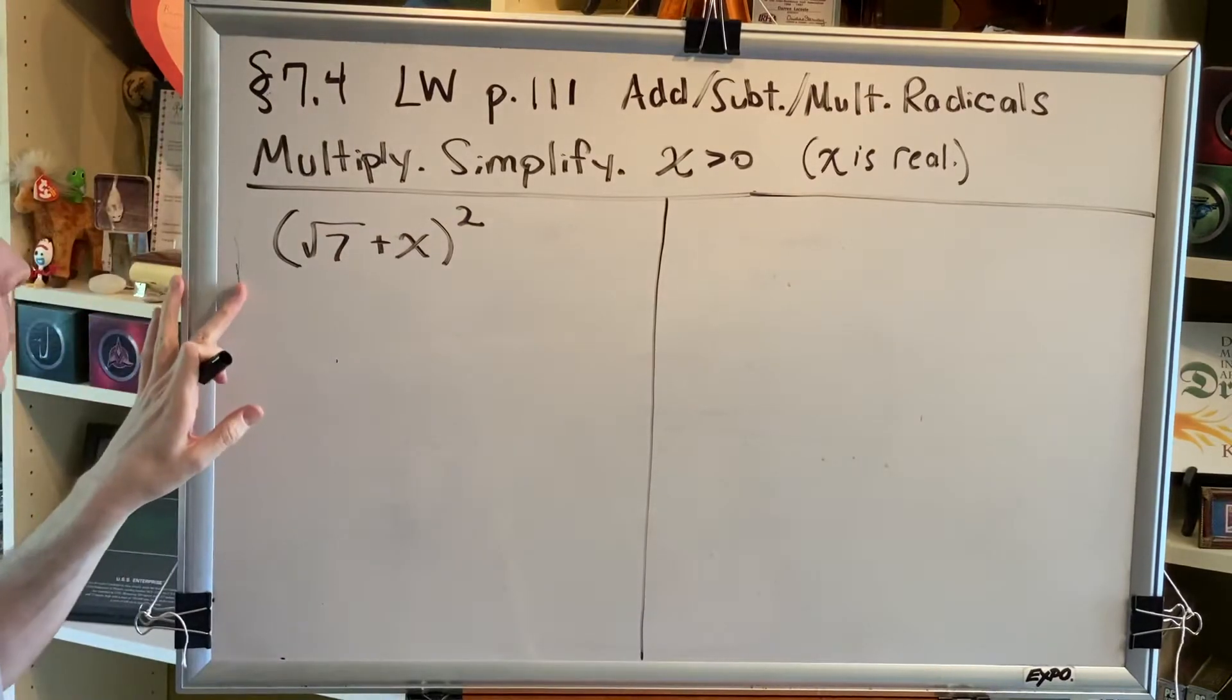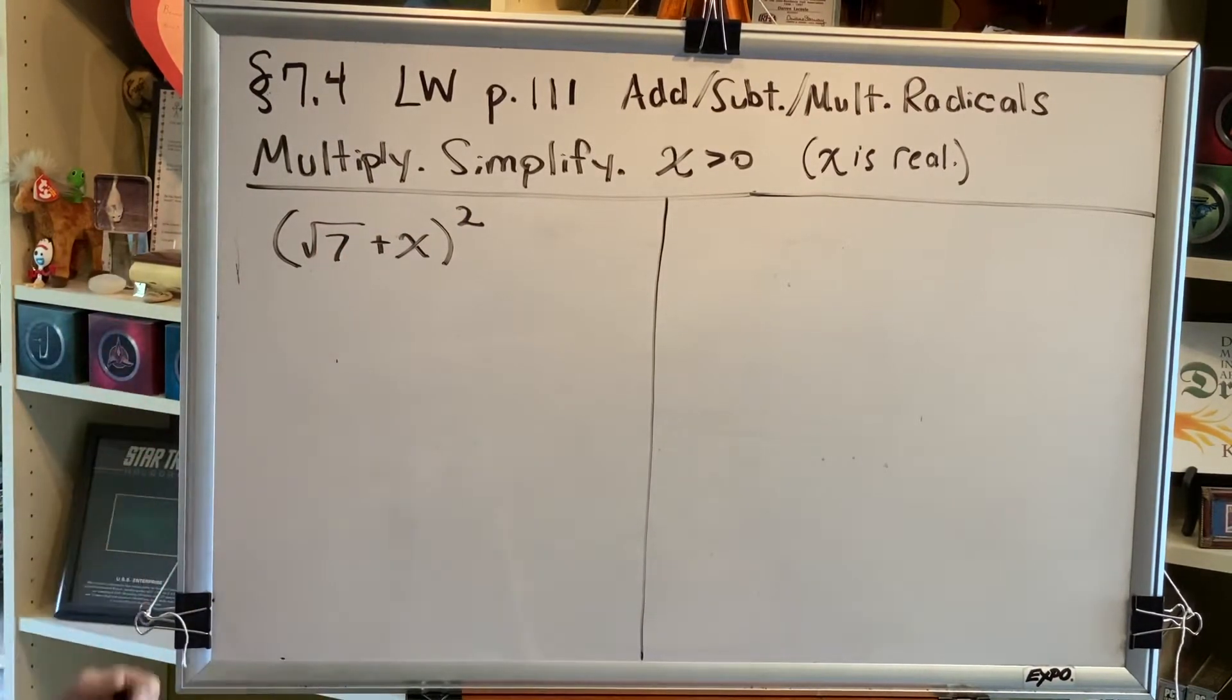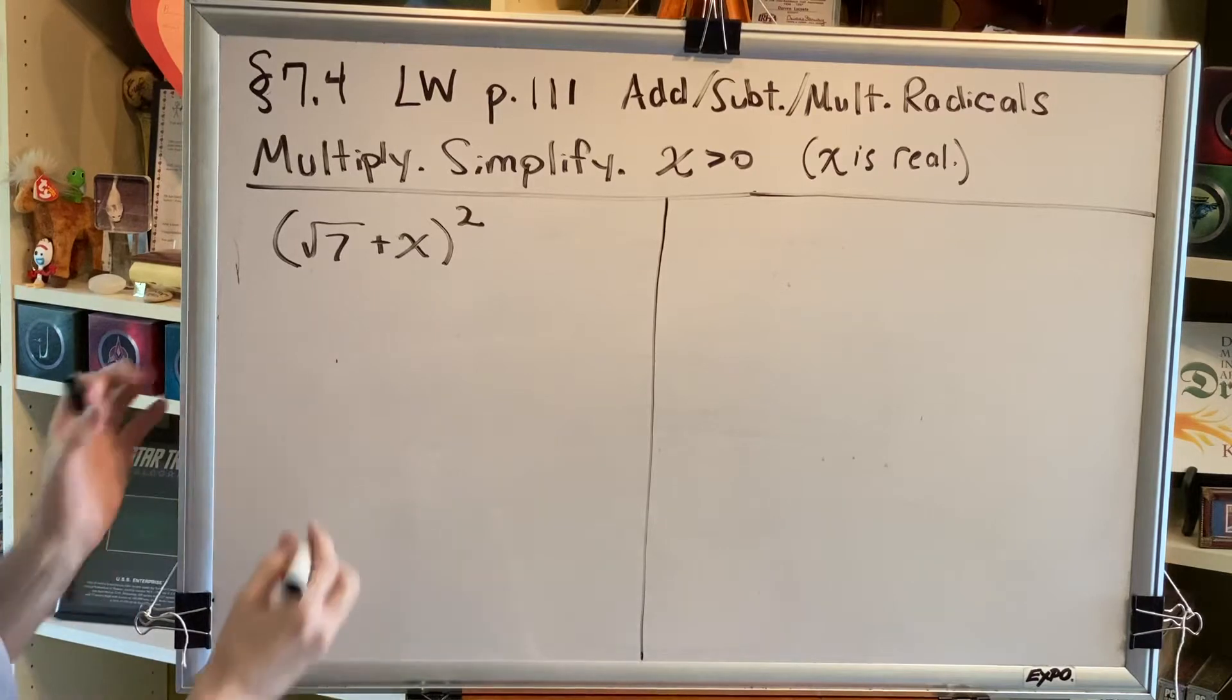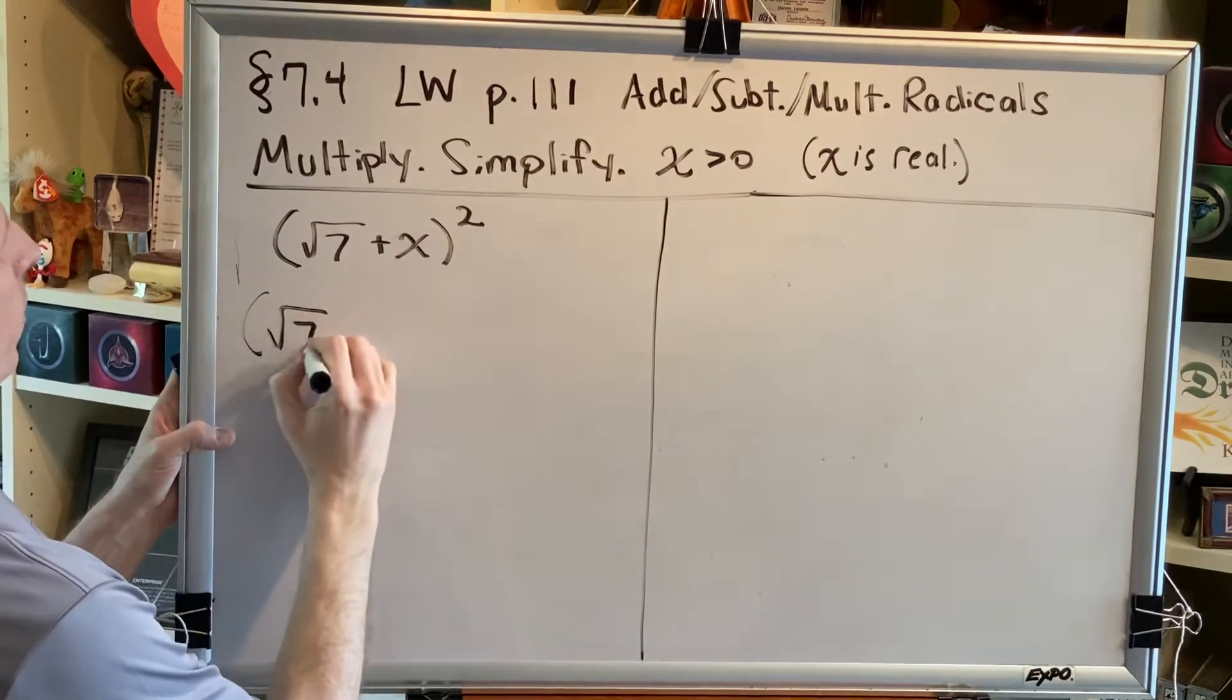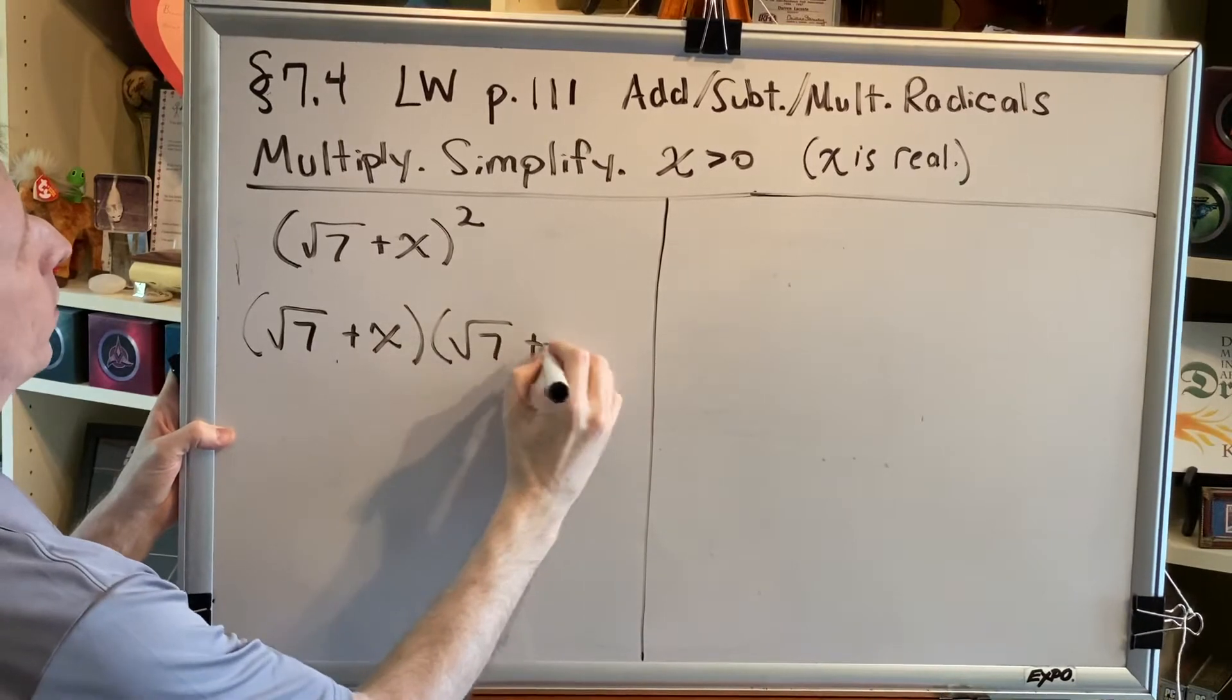Our first problem says the square root of 7 plus x, all in parentheses, squared. There's a hint in this problem and it says that the first step is to write this as the square root of 7 plus x times a second square root of 7 plus x.